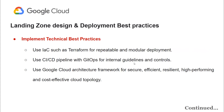When implementing technical best practices, using infrastructure as code such as Terraform can help you repeat the same process and make changes in a modular way. You can also set up a system that automatically deploys changes to your cloud infrastructure using GitOps, which makes sure you follow internal guidelines and have the right controls in place.